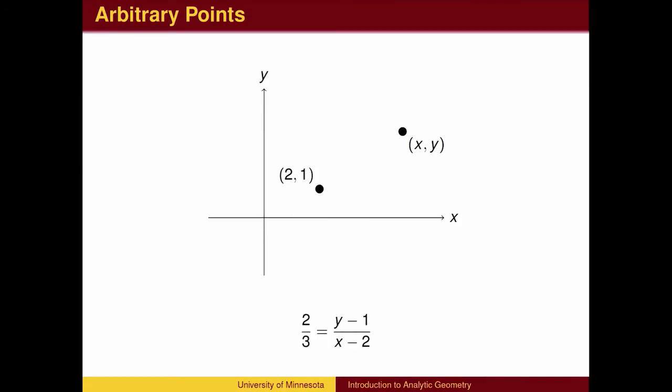What if we put a restriction on the point? What geometric object do we get if we take all points such that the slope to the point is 2/3? It turns out that we get a line.